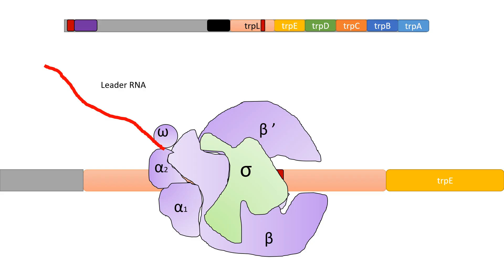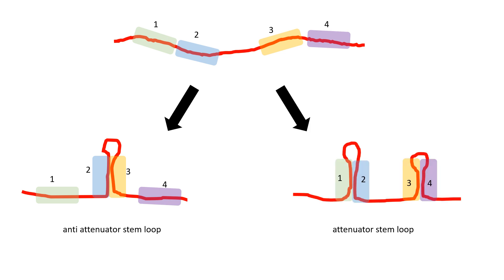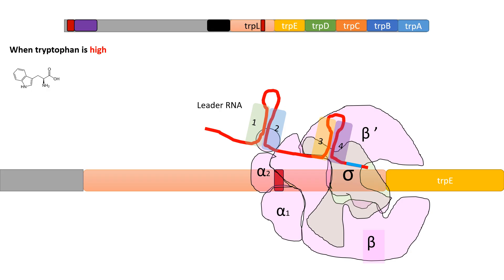Zooming into the details, the promoter and operator region contains a sequence known as the leader sequence. When RNA polymerase transcribes this leader RNA, it has four specific sites — 1, 2, 3, and 4 — that can pair with each other. Regions 2 and 3 can pair (anti-attenuator stem loop), and regions 1-2 and 3-4 can pair (attenuator stem loop). The attenuator stem loop results in pausing of RNA polymerase, preventing transcription of the tryptophan operon genes.